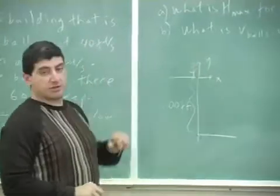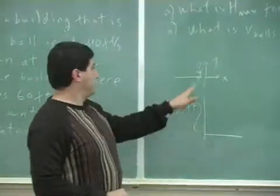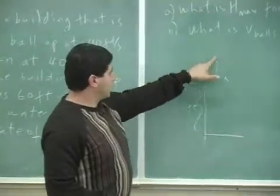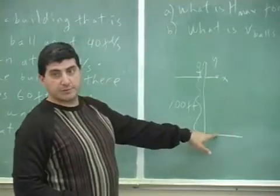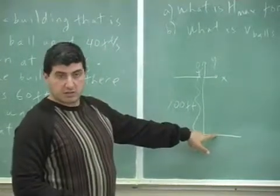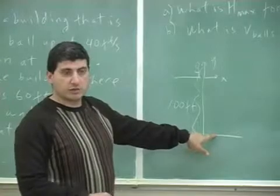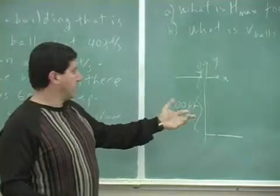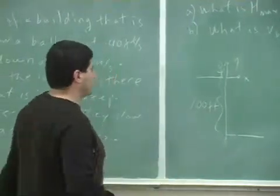If I put my x and y axis here at the top, then it's going to go up and then it's going to come down. And then the final height is going to be negative 100. It's going to end up below where you threw it. So depending on how you set it up, you get the different answer.